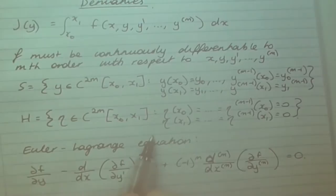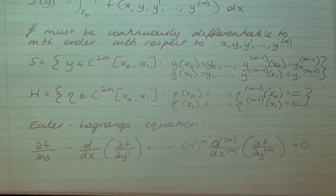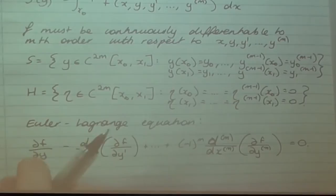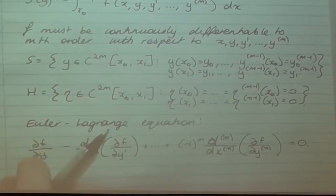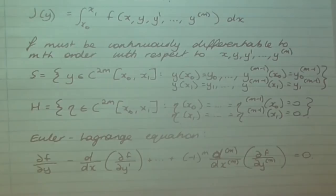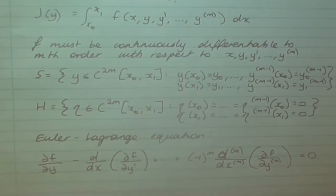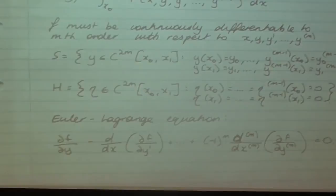H is the set on which we define our eta function. We want the fundamental lemma to apply, so we invent the necessary criteria. Eta has the same continuity as y — continuously differentiable up to order 2m — so we can differentiate in the same way. As in the lemma, eta must be zero at its endpoints, but to carry out the derivation we also need all its derivatives up to order m−1 to be zero at the endpoints as well. That's an extra assumption that will become clear once we work through the derivation.